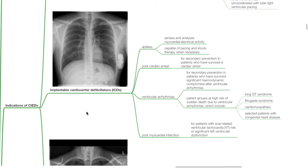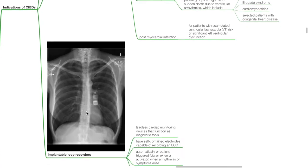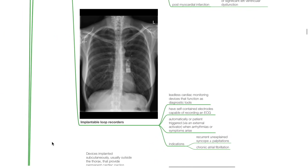ICDs are also indicated for post myocardial infarction patients with scar-related ventricular tachycardia risk or significant left ventricular dysfunction. Implantable loop recorders are leadless cardiac monitoring devices that function as diagnostic tools, with self-contained electrodes capable of recording an ECG. They are automatically or patient-triggered via an external activator when arrhythmias or symptoms arise. Indications include recurrent unexplained syncopes, palpitations, and chronic AF.